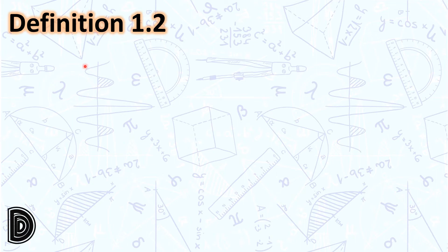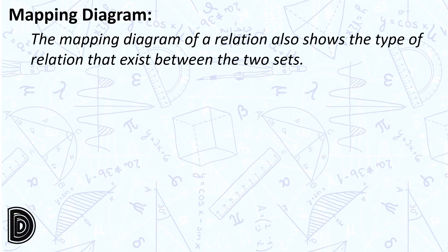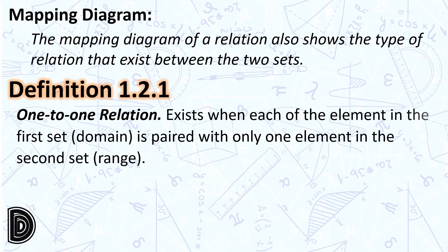Let us continue with some more definitions. A mapping diagram is used to represent the relationship between two sets in a relation. A mapping diagram represents a function if each element in the input values — the domain — is paired with only one element in the output values, the range. The mapping diagram of a relation also shows the type of relation that exists between the two sets.